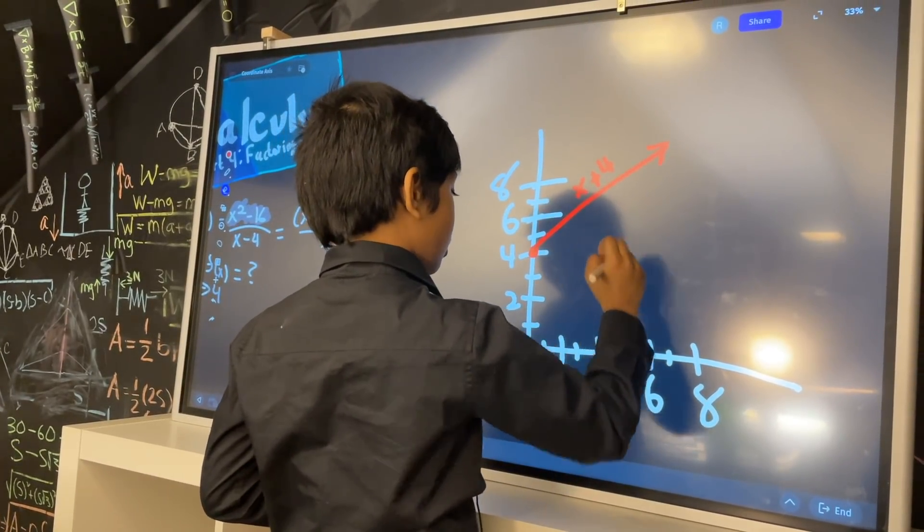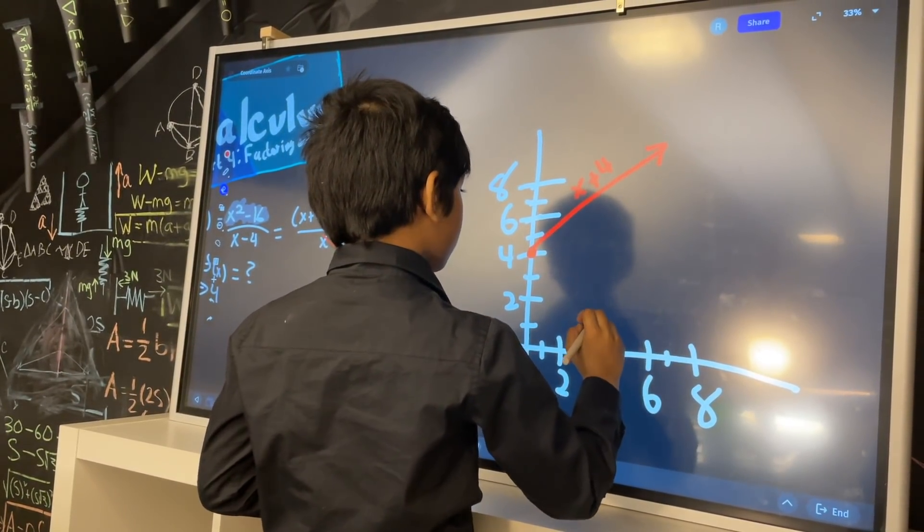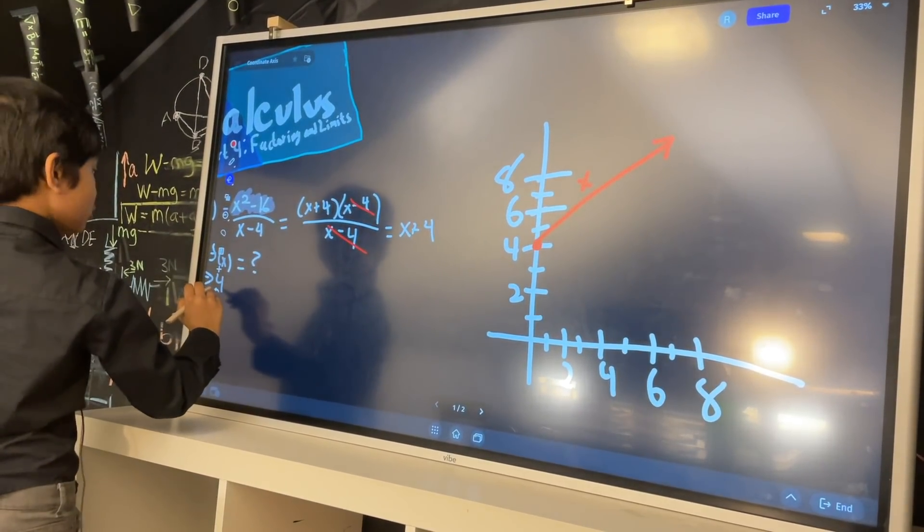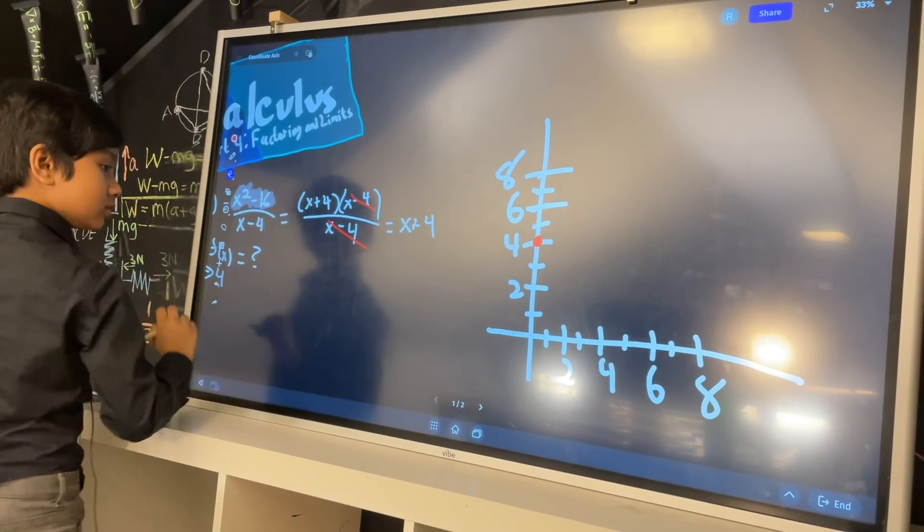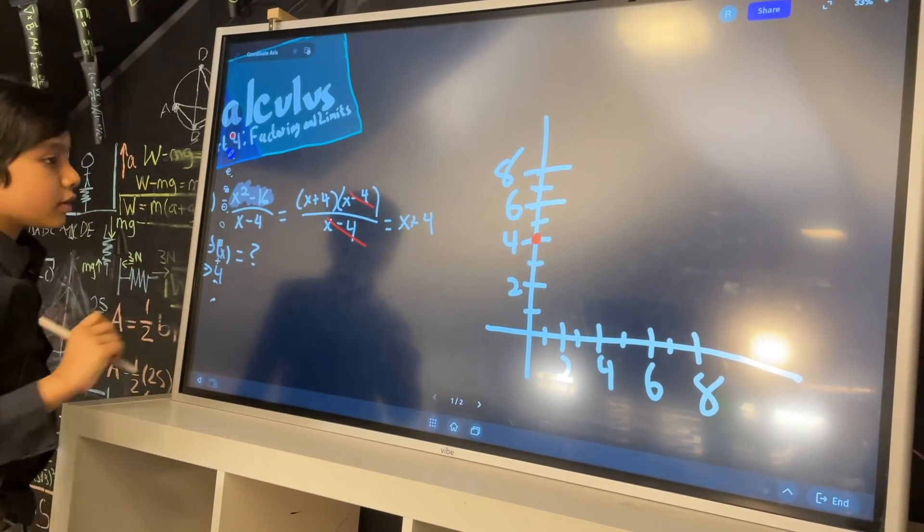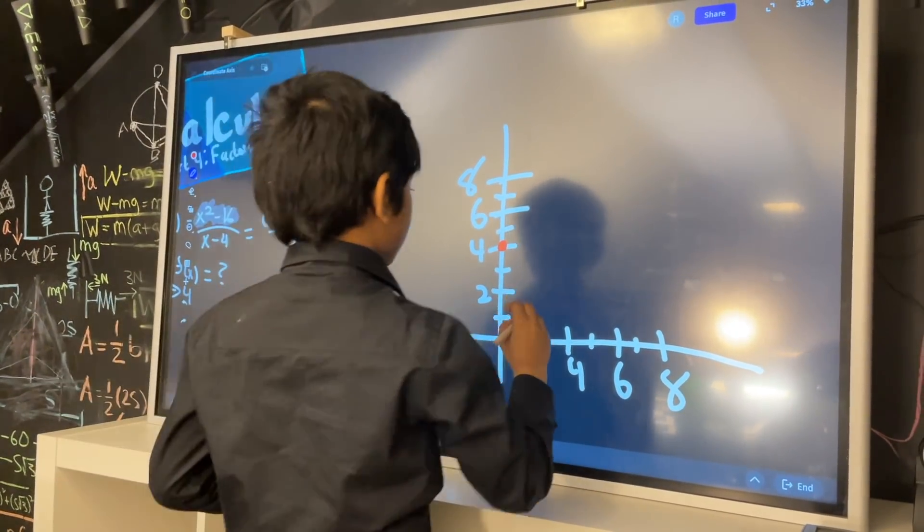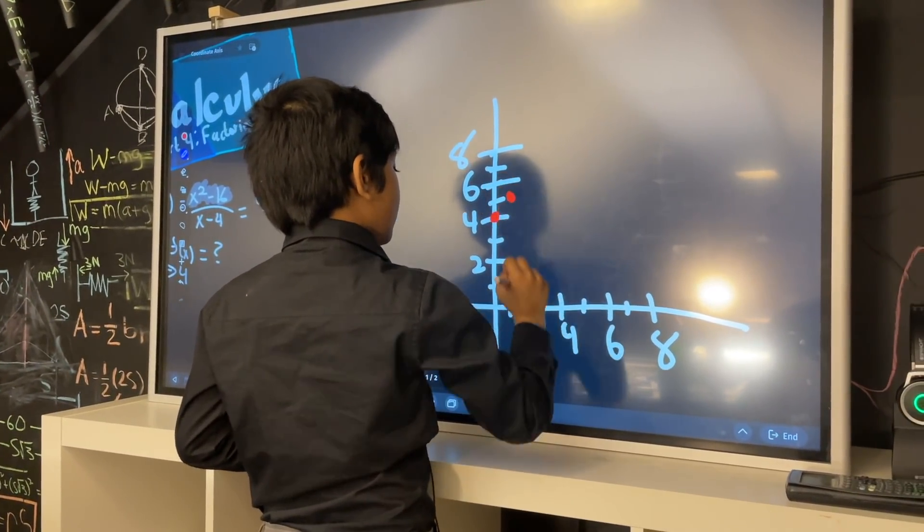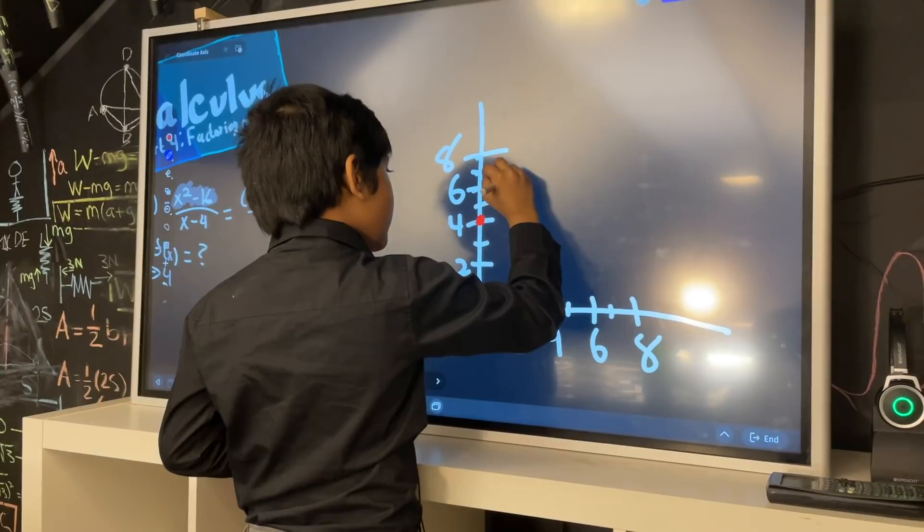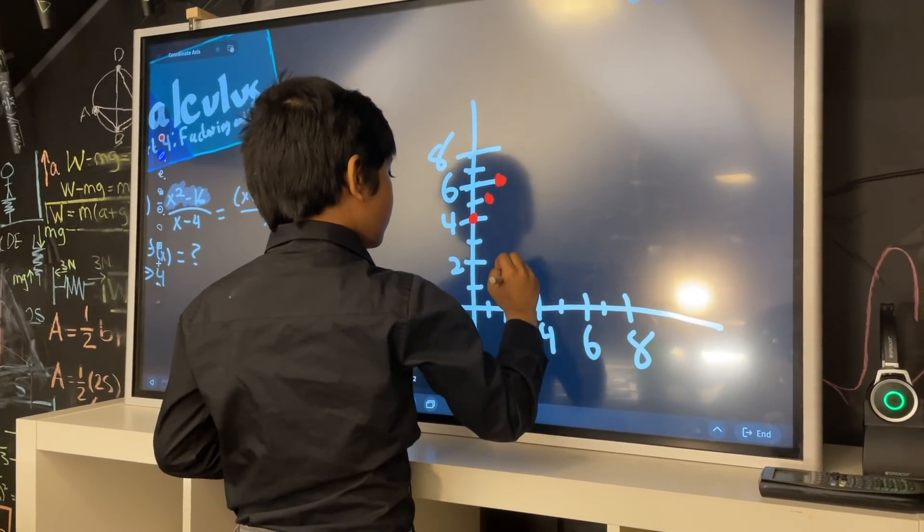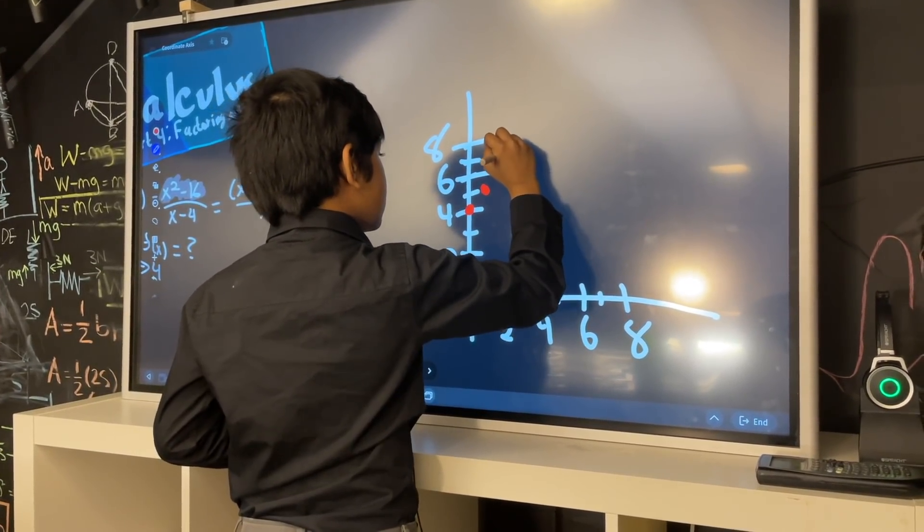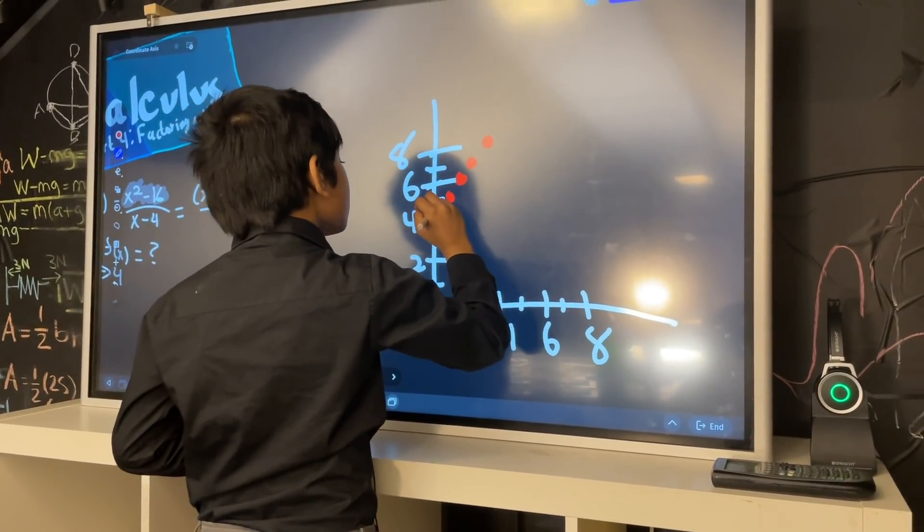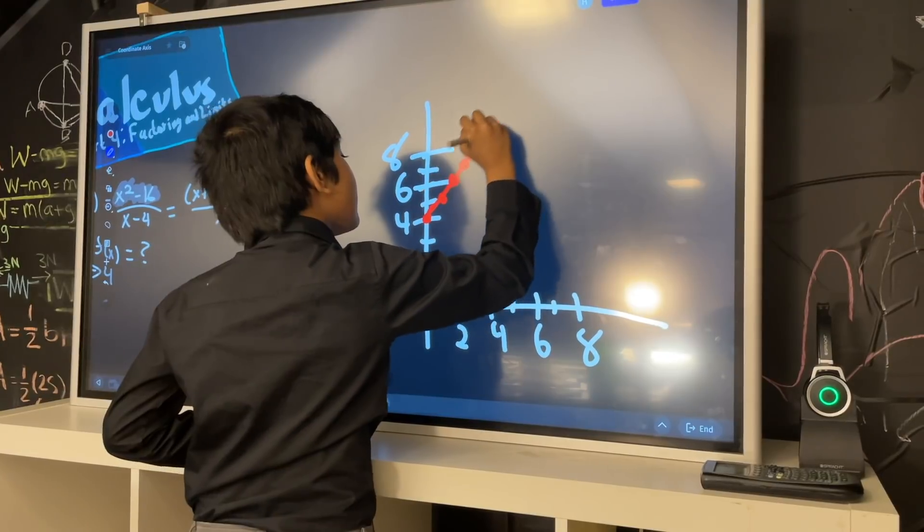So when the x coordinate is 4—oh, didn't quite draw that one right, oopsie. So if I plot the point: 4, is it zero? Two is at 6, and then 3 is at 7, 4 is at 8, and it would virtually look like this.